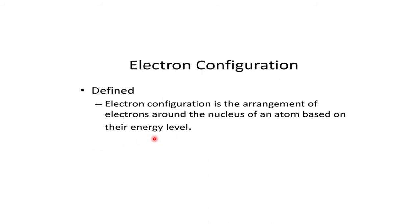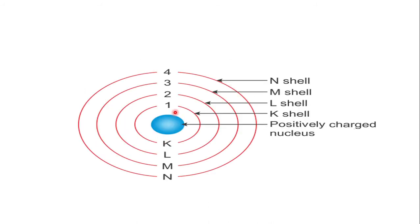What is an energy level? It is nothing but the shells. The first shell, the K shell, is the first energy level. The L shell is the second energy level, the M shell is the third energy level, and the N shell is the fourth energy level. We have neutrons and protons in the center which is the nucleus. The first rule is that we fill electrons from inside out — the first energy level is filled first, followed by the second, third, and fourth.